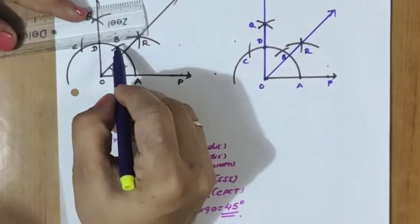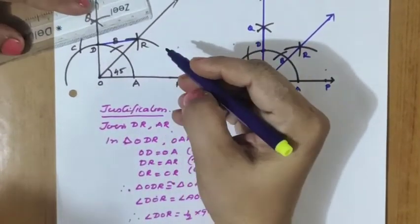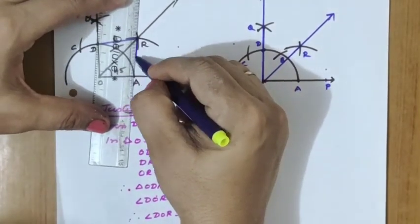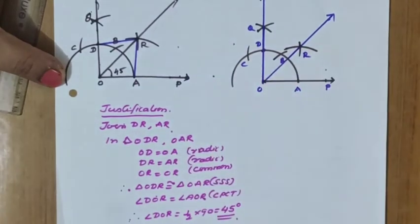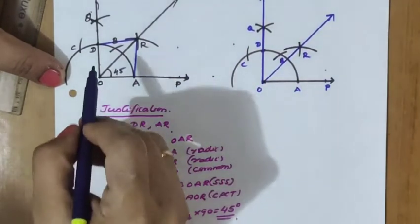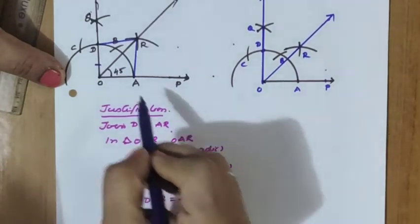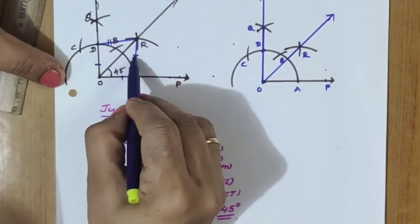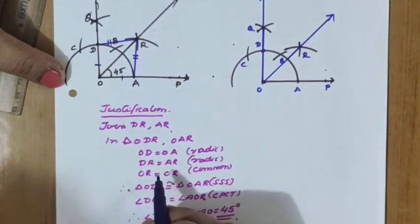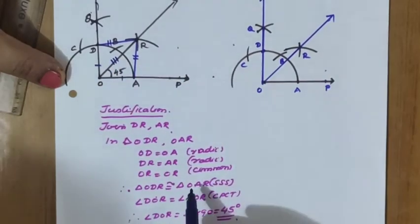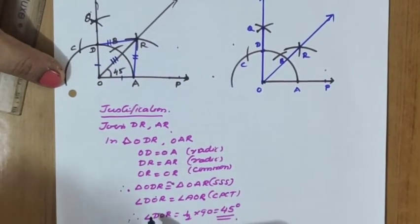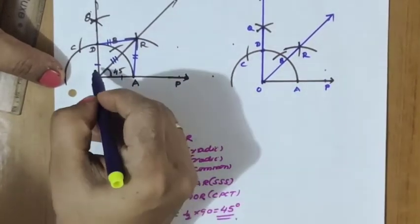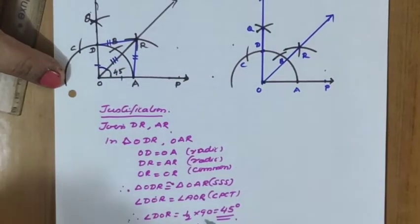OR is the angle bisector. For the justification, we join DR and AR. There are two radii: OD equals OA. Next, DR equals AR — another equal radius. OR is common. By SSS criteria, triangle ODR is congruent to triangle OAR. Therefore angle DOR equals angle AOR — each is equally bisected. The total angle is 90 degrees, so half of 90 equals 45 degrees. Hence proved.